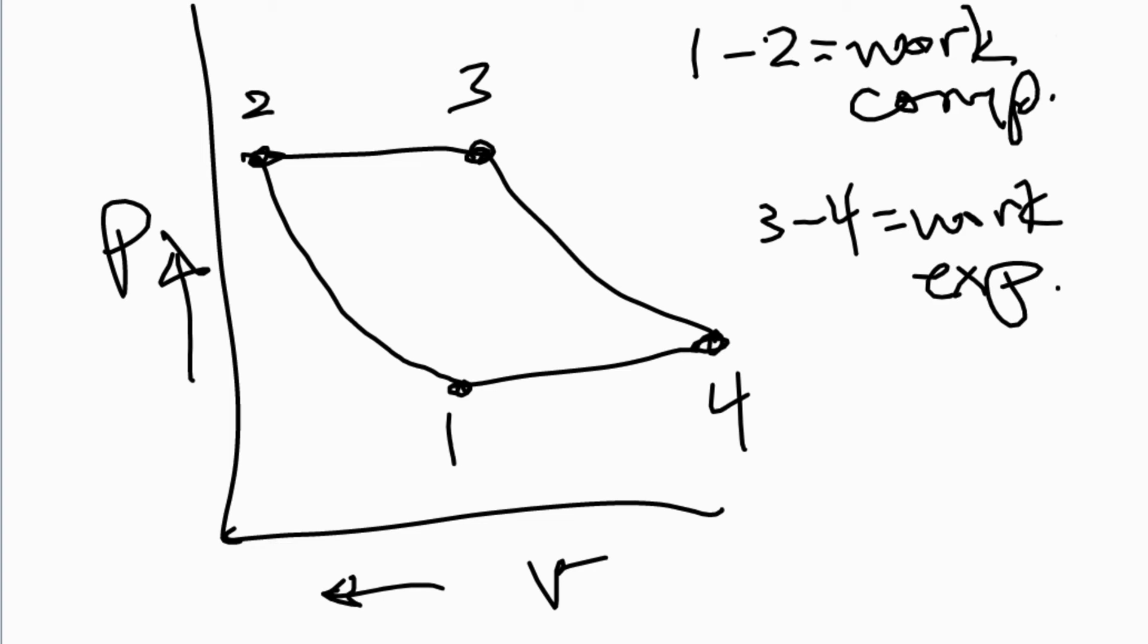Then, using your ideal numbers, you figure out what your ideal work of expansion is from point three to four, and then you apply the efficiency to that ideal work of expansion.